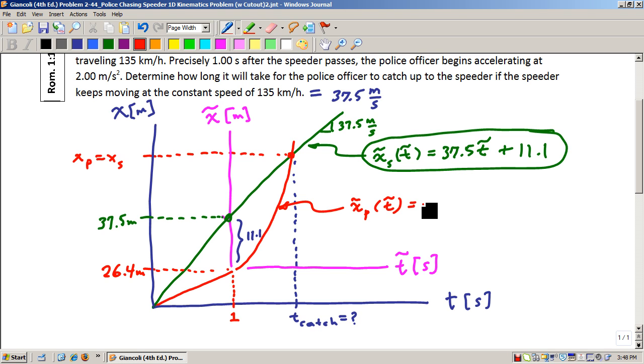is the velocity initial, which was the 26.4 meters per second times T-tilde plus one-half times the acceleration of the police officer times T-tilde squared. We were told what the acceleration rate is. It's two meters per second squared.